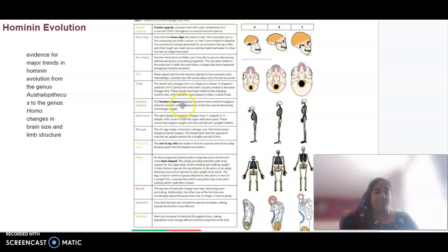The foramen magnum, where the spinal cord joins the brain in the skull, has gradually become more central throughout hominin evolution as a consequence of us becoming standing upright. The spine curve changes from that C-shaped spine to an S-shaped spine. The rib cage of hominins changes over time from funnel shape to being more barrel shaped. The arm to leg ratio decreases in hominin species over time as legs become more useful as we walk on two legs instead of four.